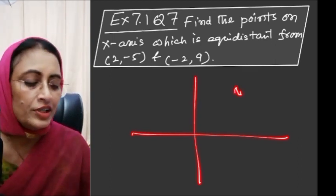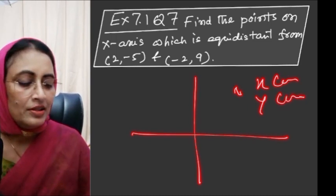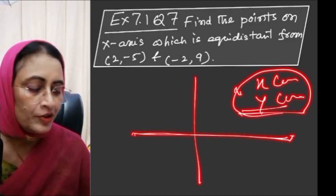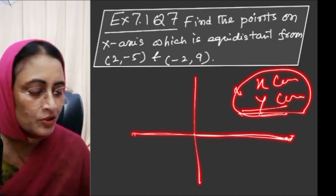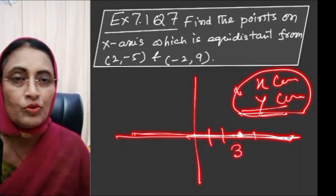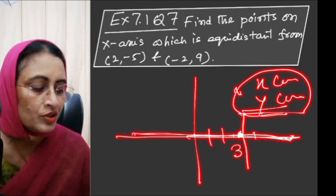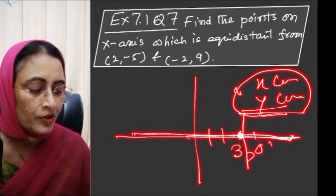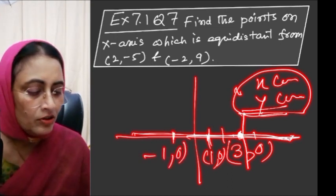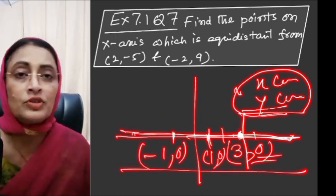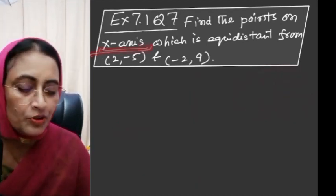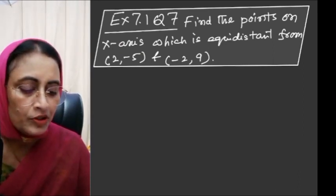We know any point has two coordinates: x-coordinate and y-coordinate. But if the point lies on the x-axis, the y-coordinate will be 0. For example, (3,0), (1,0), (-1,0) — all have y-coordinate 0. So any point on the x-axis has y-coordinate equal to 0.